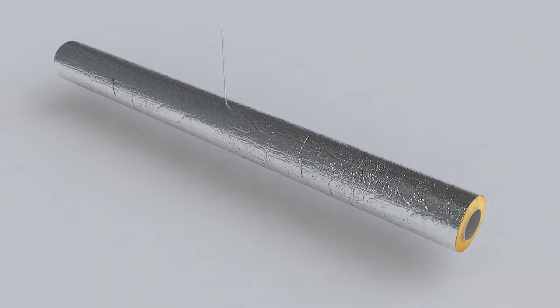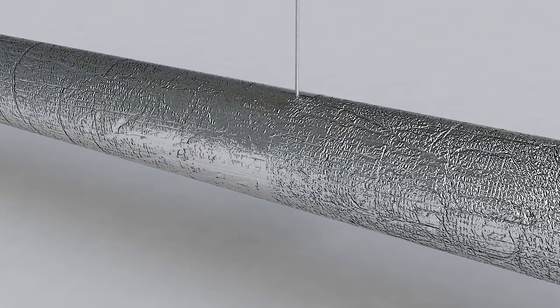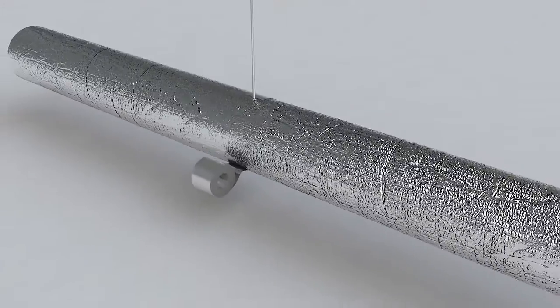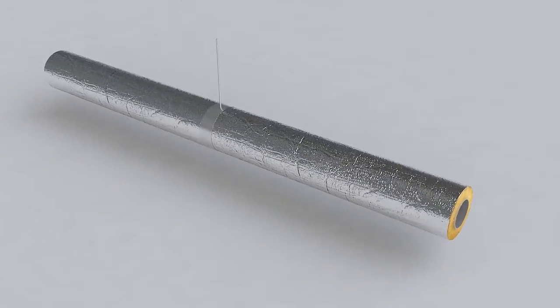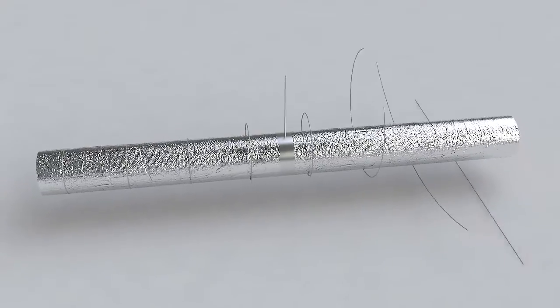With ducts that carry chilled or cold air, all transverse seams should be taped tight using AL Installation Tape. Finally, the insulation is secured with binding wire at 300 millimeter intervals. Then the insulated duct is ready to be installed.